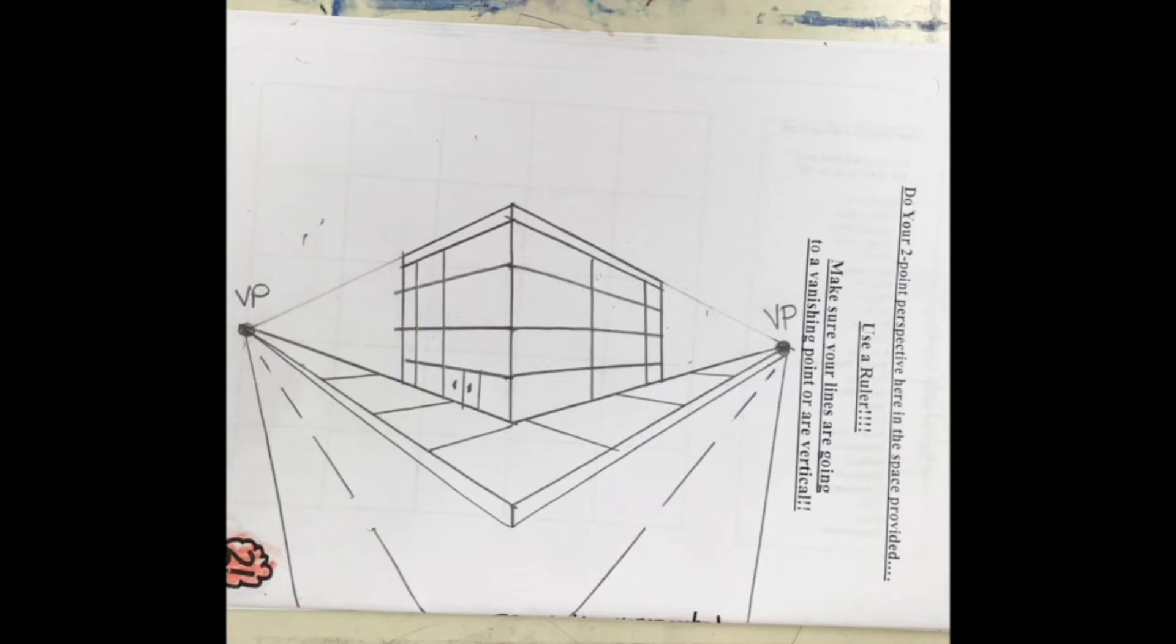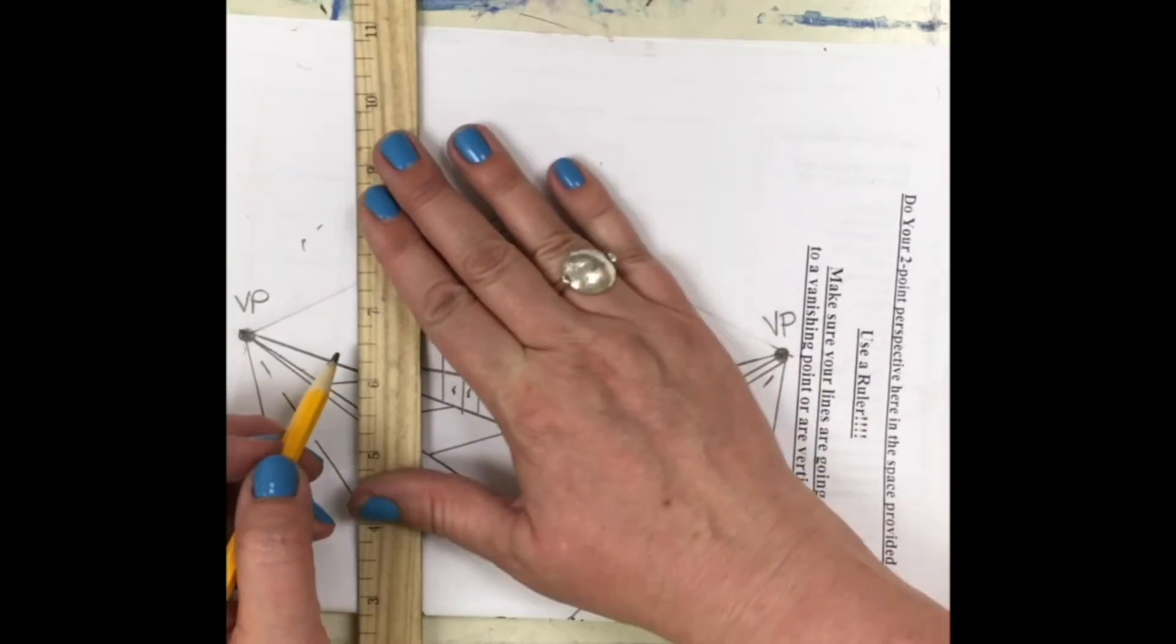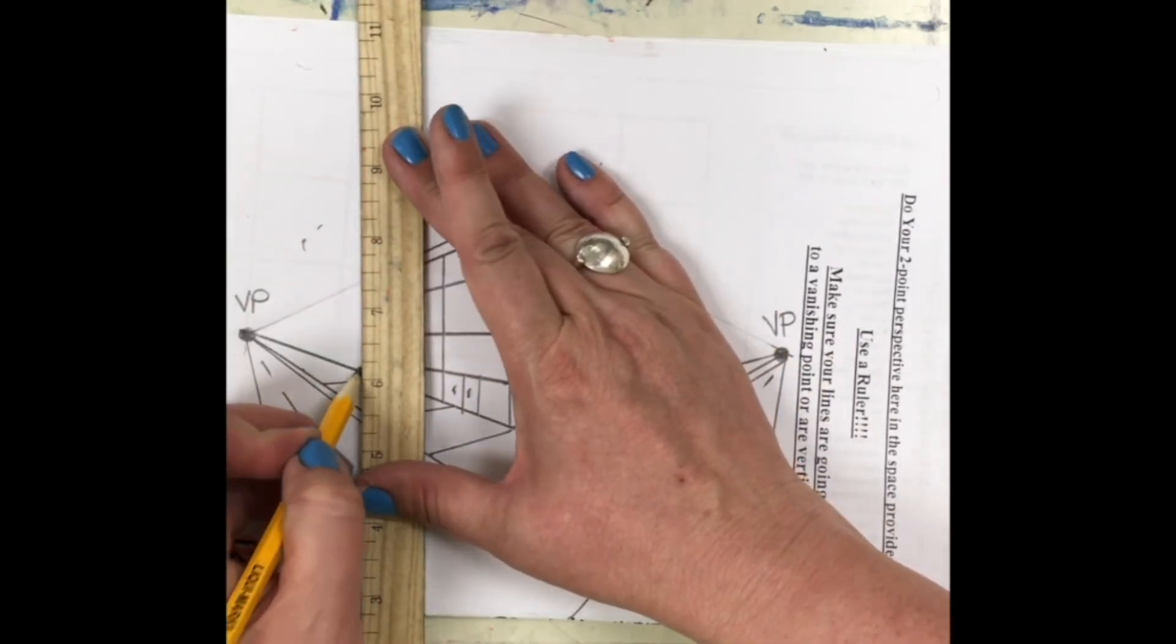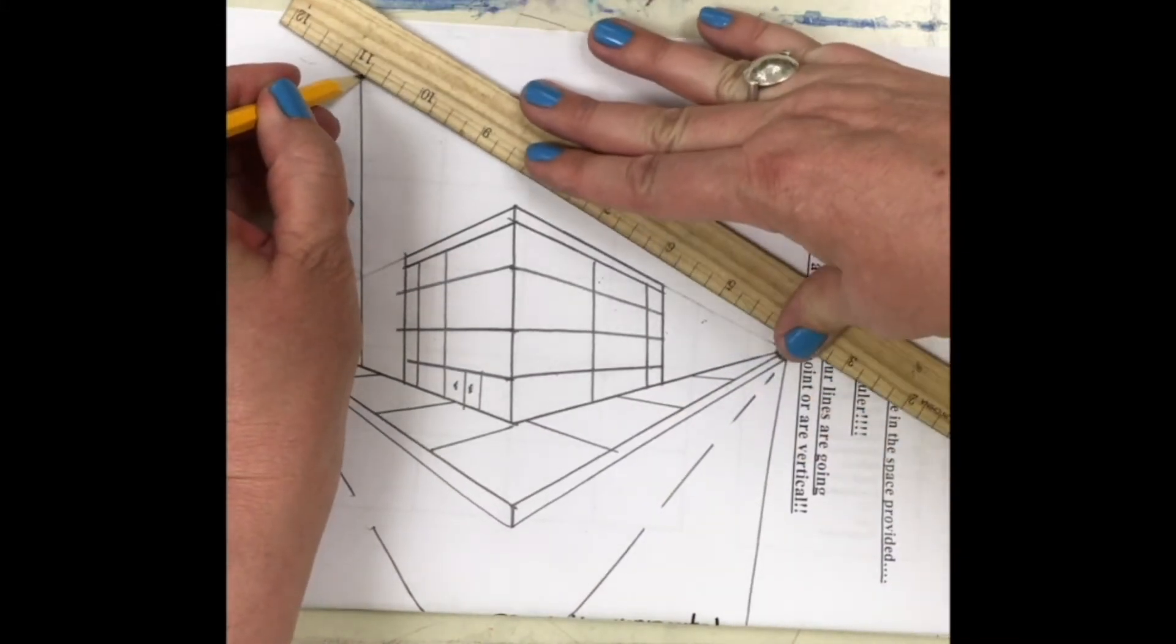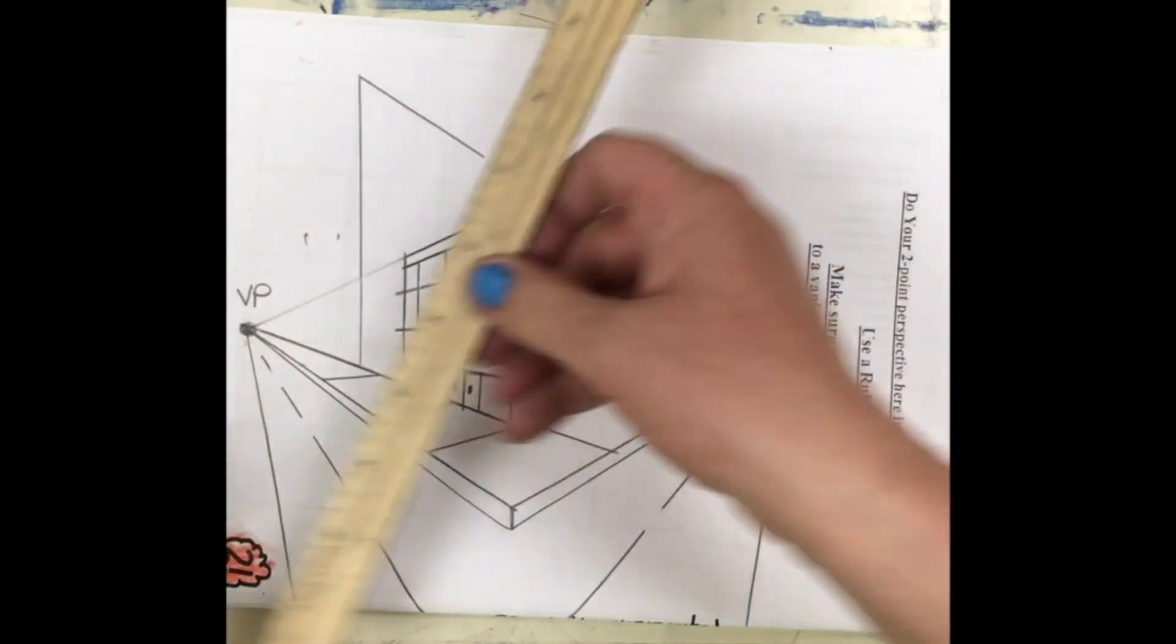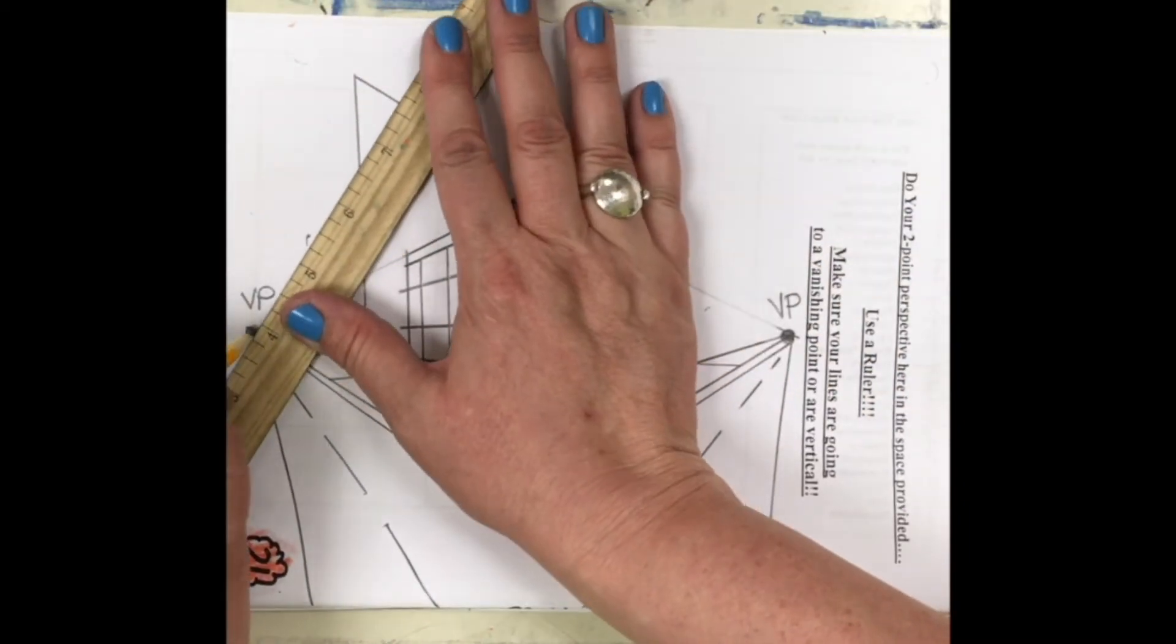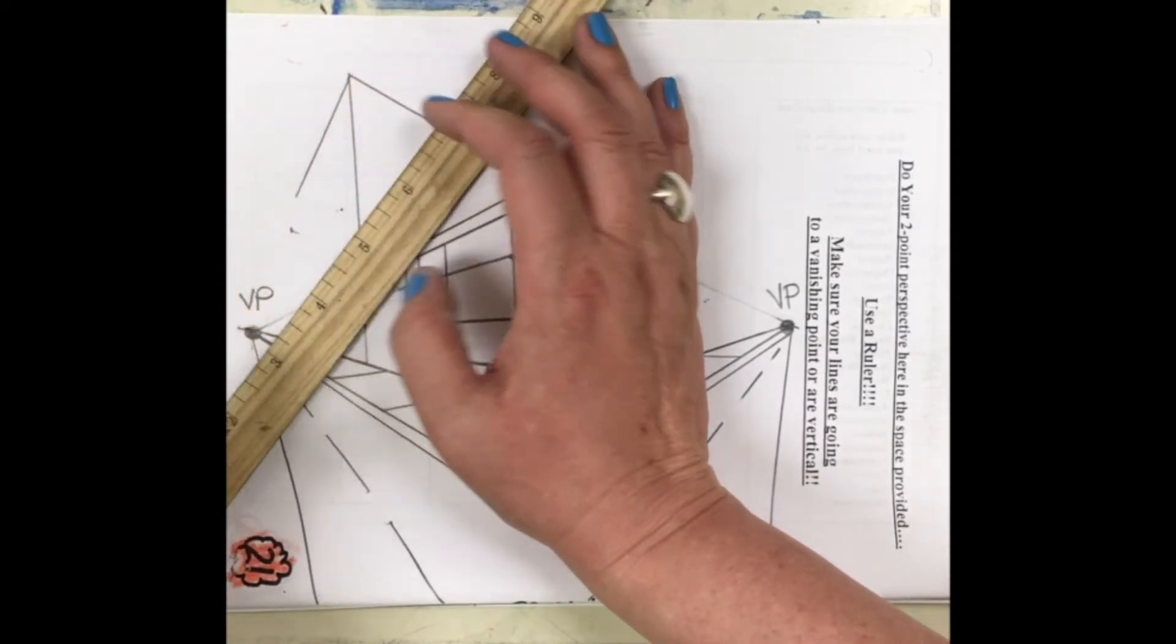Now I have to put two more buildings on my picture. So I'm gonna start with, again, a vertical line like I always do. Then I'm going to connect it to the vanishing point. And this one's really abrupt. It's right by the vanishing point.